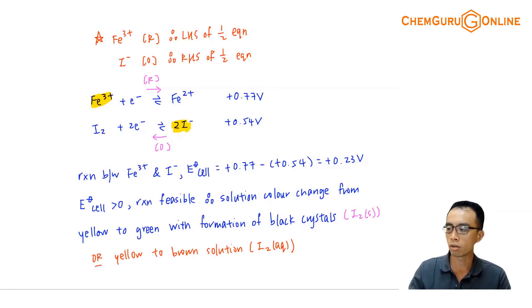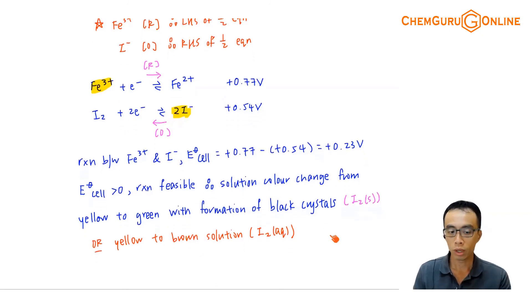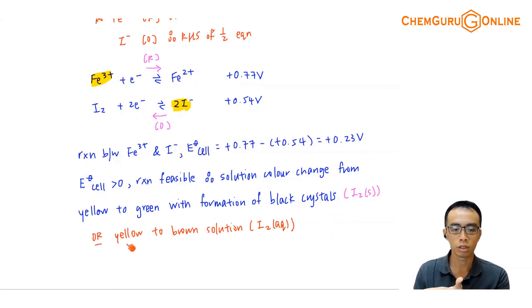In this case, iron 3 plus will be reduced to iron 2 plus. So the color change involved, iron 3, it is a yellow solution. Iron 2 plus, this is a green solution. We can say that the solution changed from yellow to green. Then I2 is formed. If it is a solid, it will be a black crystal. We can also say that I have a yellow solution. Then I form a brown solution because of my I2, if it is aqueous, if it dissolves in the solution. So either one of the observation is fine.